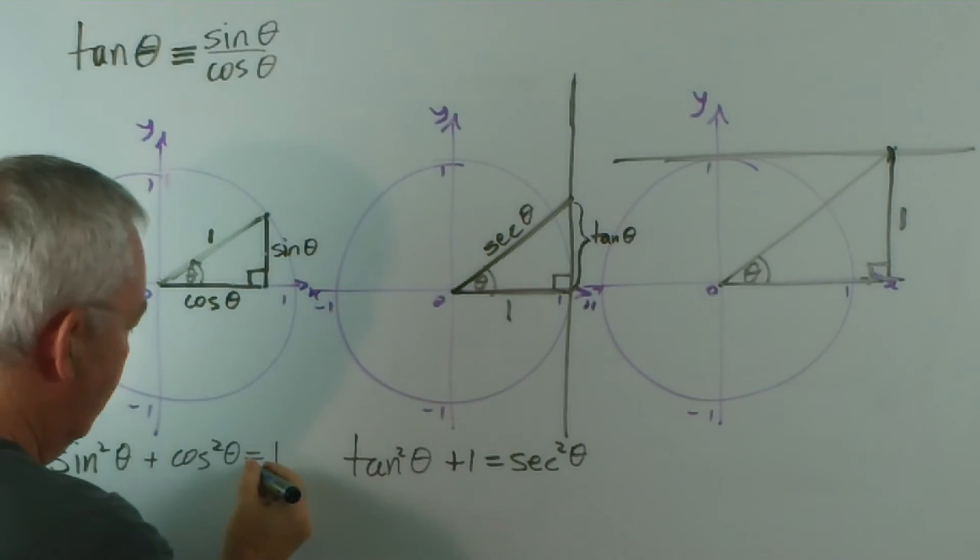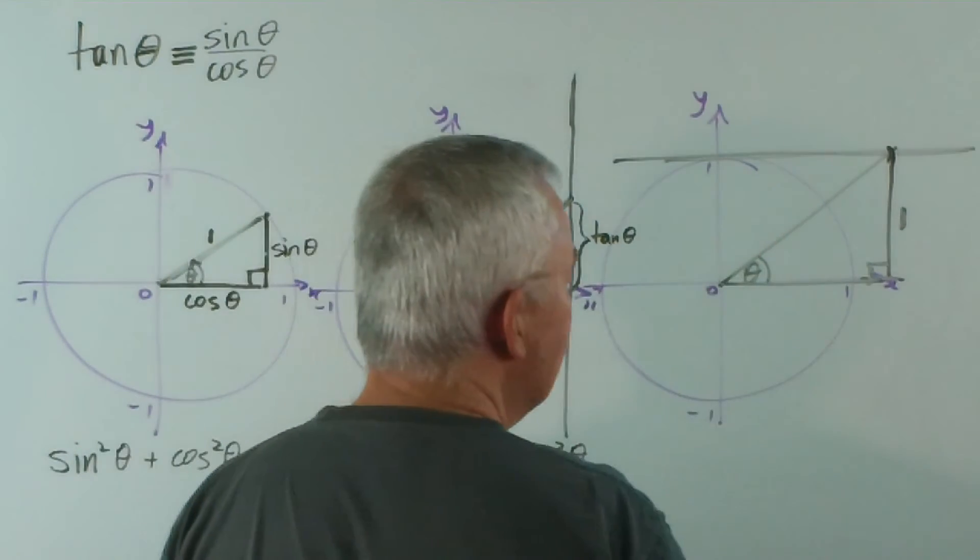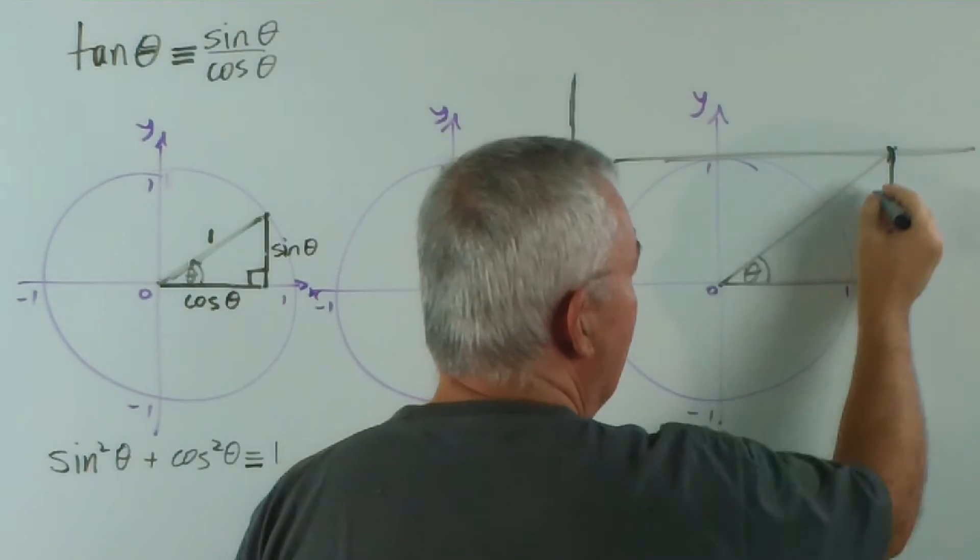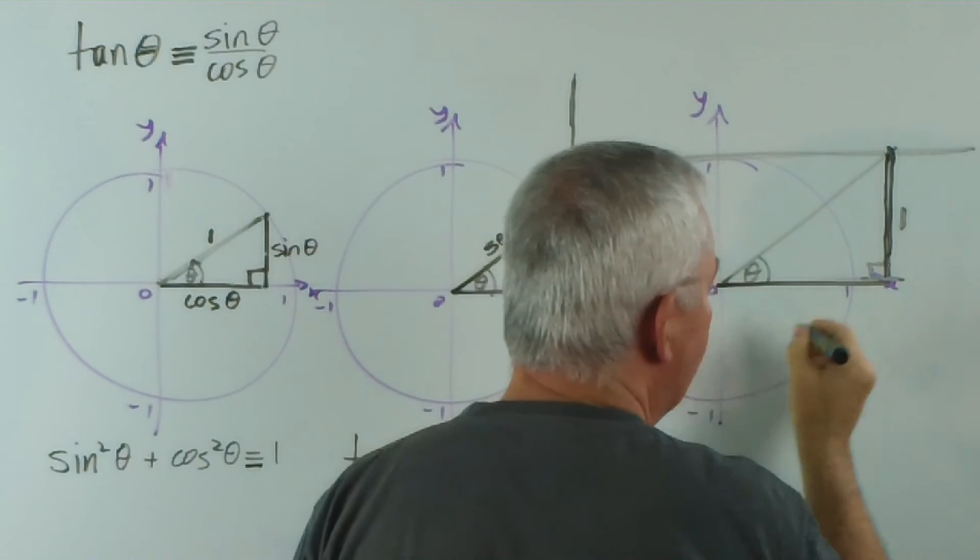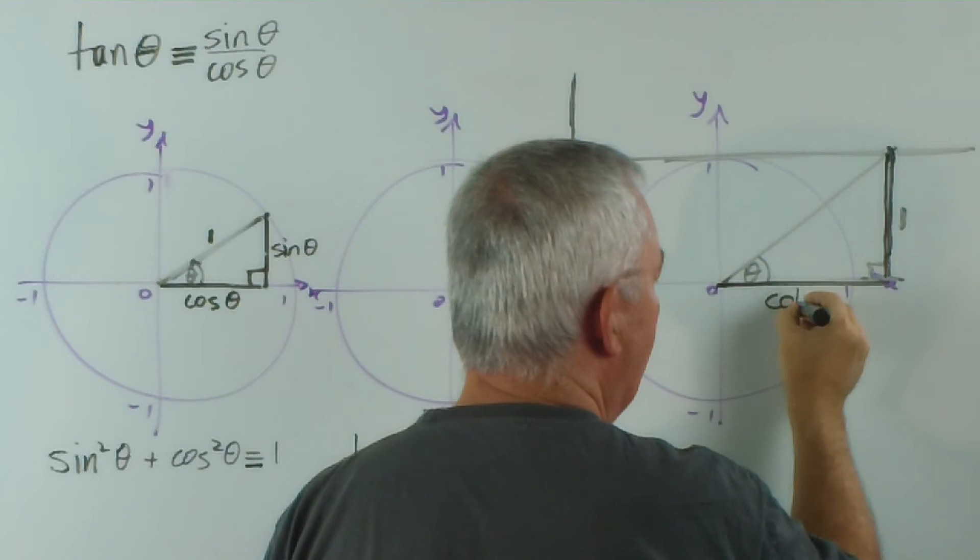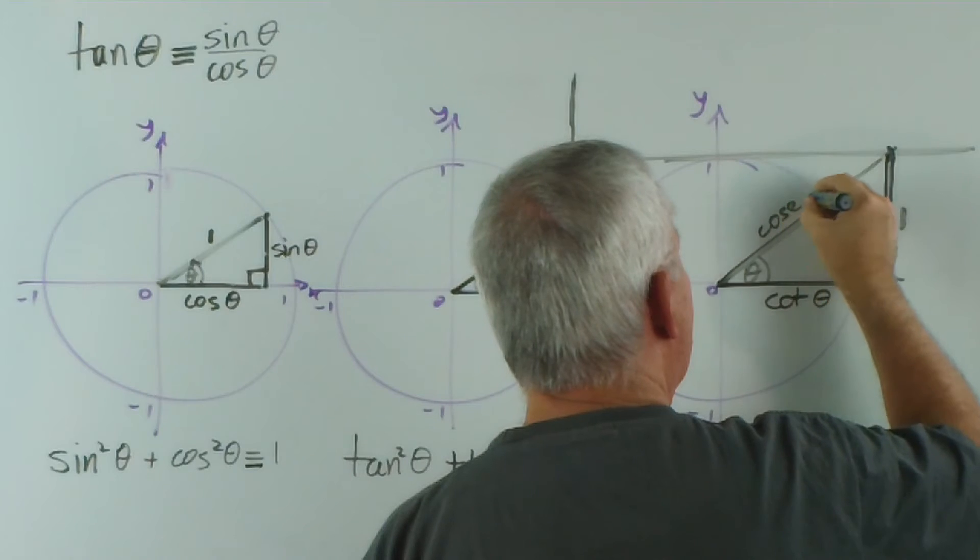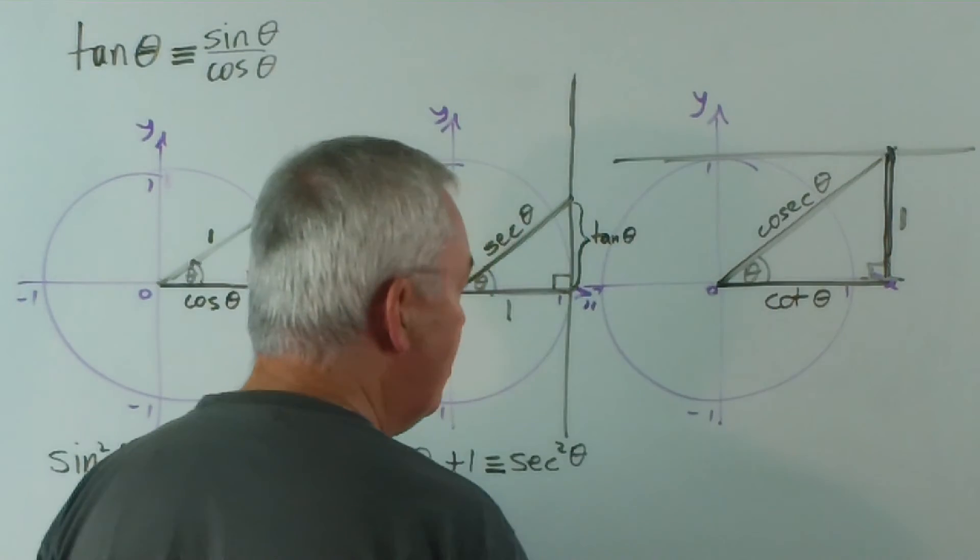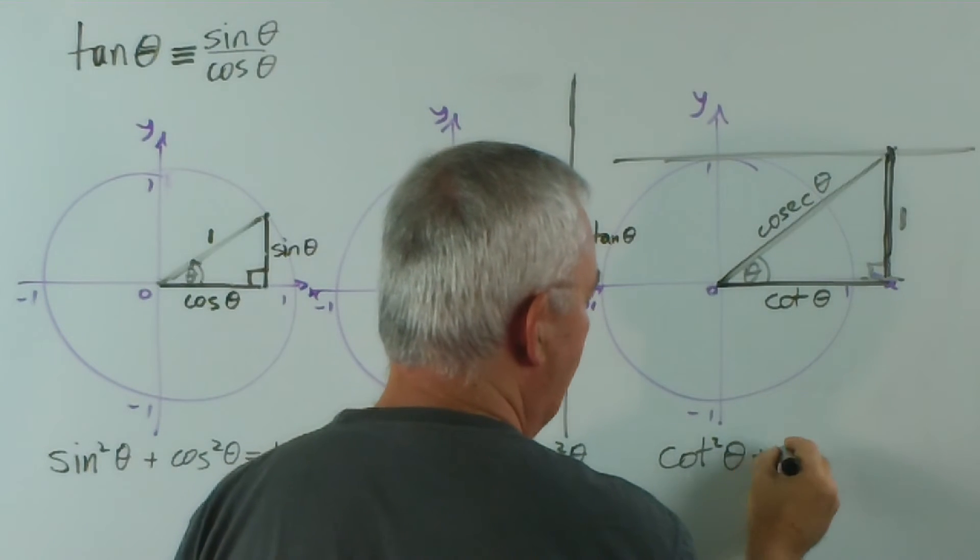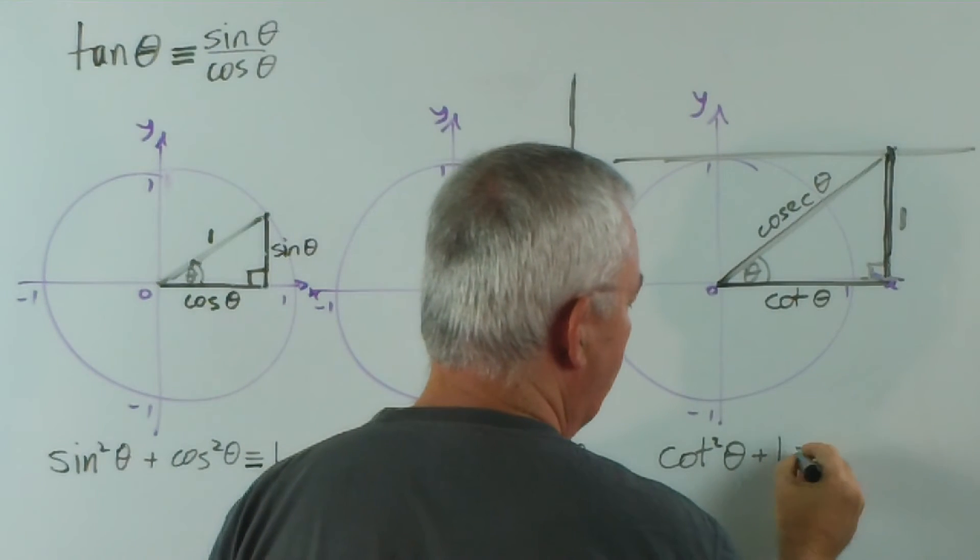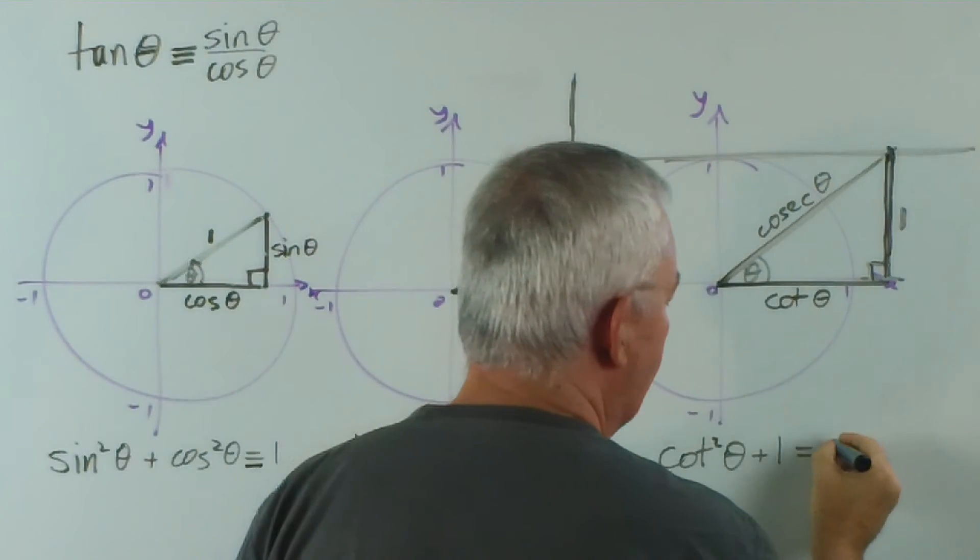Now, of course, I've just reminded myself that these are identities. And the last one... this length is one, the altitude. The base of the triangle is the cotangent of theta, and the hypotenuse is the cosecant of theta. So, we get cot squared theta plus one, because they're the two short sides of this right-angle triangle, equal cosec squared theta.